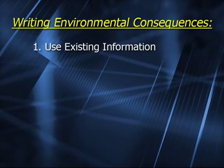Now that you understand the importance of this section, let's discuss how to write the actual environmental consequences. The first step is to make good use of existing information. As with the affected environment discussion, you may find lots of useful information in other NEPA documents, scientific literature, and so on. You may tier to broader NEPA analyses, and you can incorporate other resource information by reference. Remember to cite and summarize.